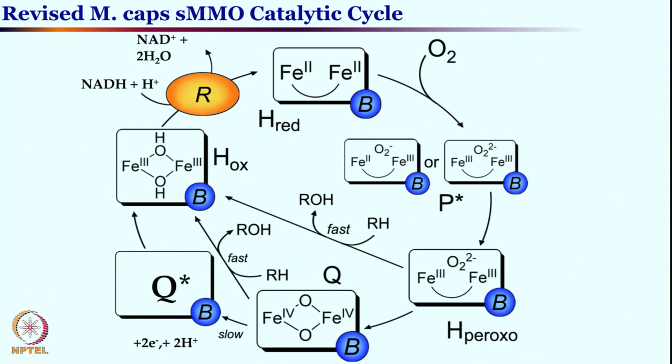In the next class we will try to see how these studies are done to better understand the intermediates forming here. The iron(IV) dioxo intermediate is quite reactive, and we will see the similarity of the di-iron(IV) mu-oxo species with that of the copper(III) bis-oxo or mu-oxo intermediate. Keep studying — we will come back in the next class to discuss the mechanism of this reaction and how people have studied it in greater detail. Thank you very much.